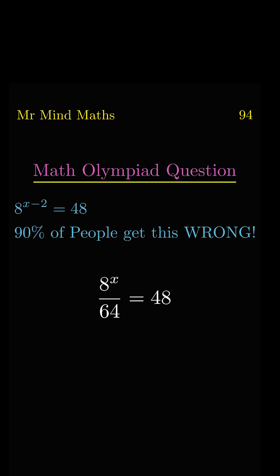Now we will multiply both sides by 64. On the left hand side, 64 will get cancelled with 64.